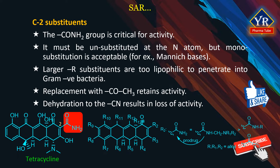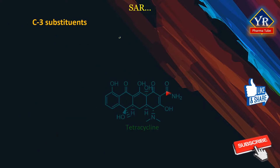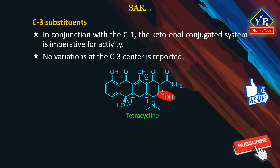The tetracycline C2 position is limited with regard to structure activity relationship. C3 substituents: in conjunction with the C1 position, the keto enol conjugated system is imperative for antibacterial activity and no variations at the C3 center have been reported.